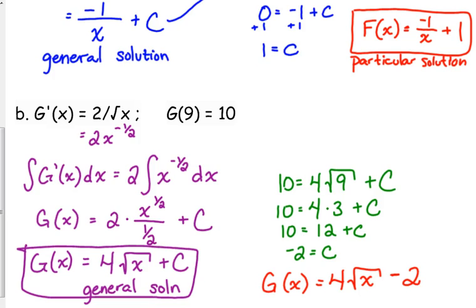And remember, you can always take the derivative of that to confirm that it's the original function in question. In this case, the x to the 1 half. So take the derivative, bring down the exponent. 4 times 1 half is 2. Subtract 1 from the exponent. That becomes negative 1 half. Derivative of negative 2 is 0. So you do get the original function.